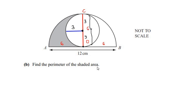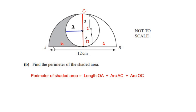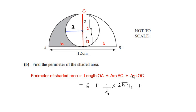I can divide the perimeter of the shaded area into three parts: first, the length OA; plus the arc length AC; plus the arc OC. Length OA we have already got as 6 centimeters. Arc AC is the circumference of a semicircle, so we use the formula one over two times 2 pi r1.